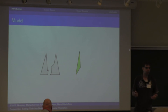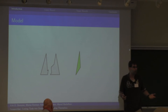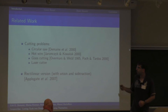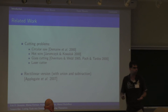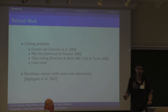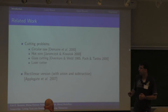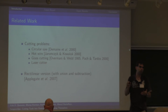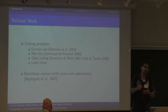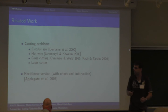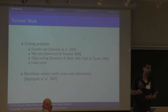Now we formulate this game as a cutting problem. There's quite a bit of previous work. People have looked at different methods of cutting shapes — using circular saws, hot wires, lasers, glass cutting tools. There's also a rectilinear variant where you allow both union and subtraction of material. We only allow that you use your object to remove material, whereas that work also allows you to overlay them and add material back where you first removed it. So all of those have been studied, but ours is again a slightly different problem.